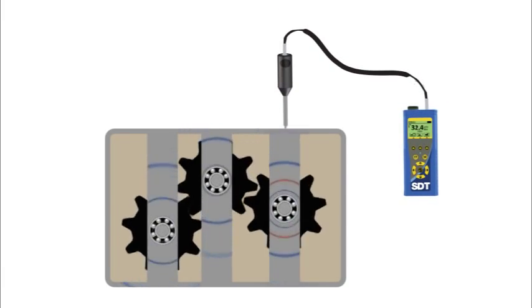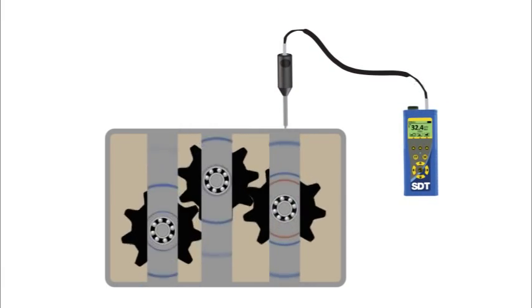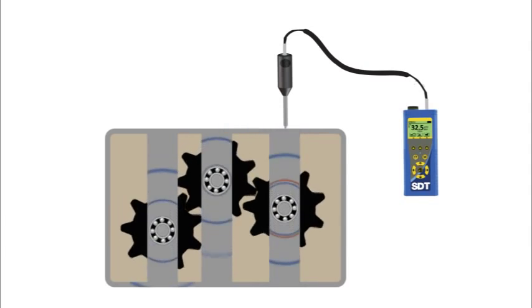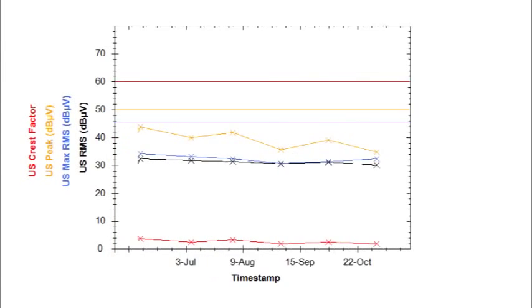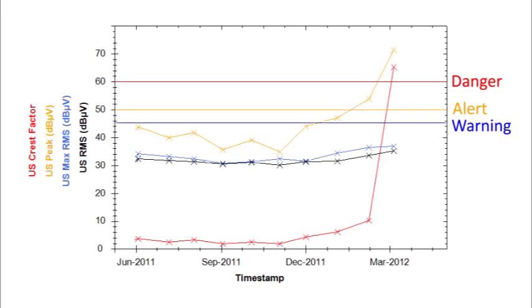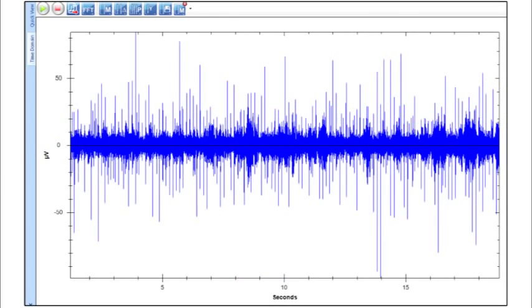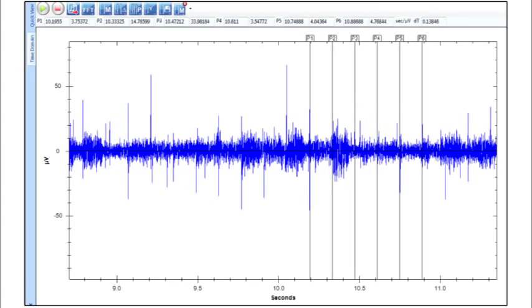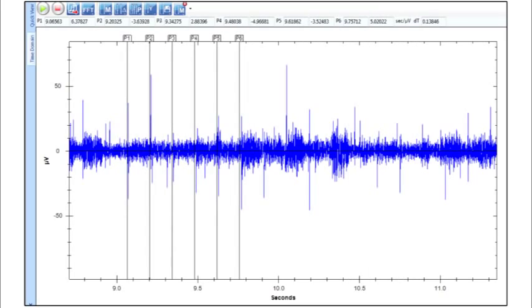Even with all the background noise in your plant, the SDT 270 hears only the bearing's ultrasound. It measures and records it to let you predict and plan your next maintenance move. Static signals are measured as decibels and trended against previous values and preset alarms. Dynamic signals are recorded and analyzed in the time and frequency domain for in-depth analysis of fault conditions.